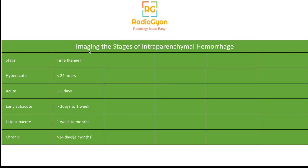First, let's get the timing and nomenclature out of the way. Hyperacute blood is less than 24 hours. Acute is one to three days. Early subacute is more than three days to one week. Late subacute is one week to months. Chronic is anything more than two weeks and beyond.